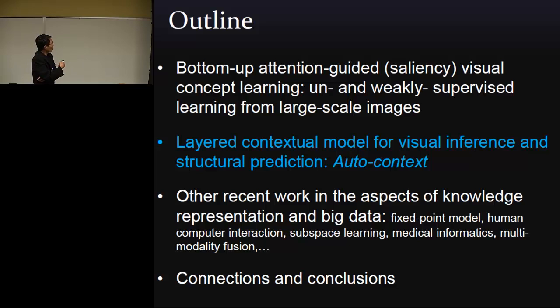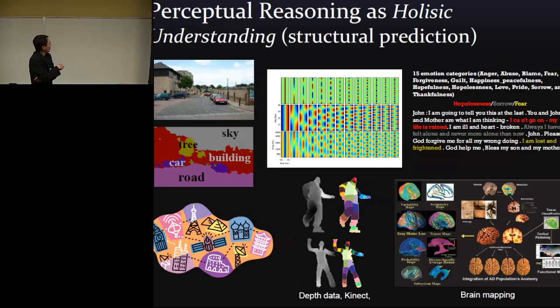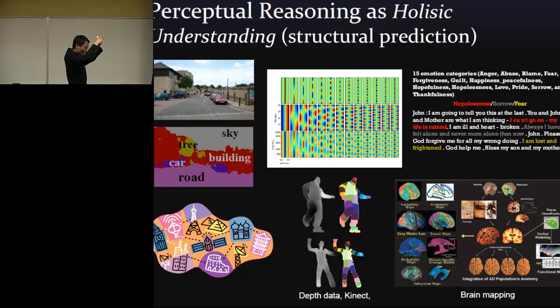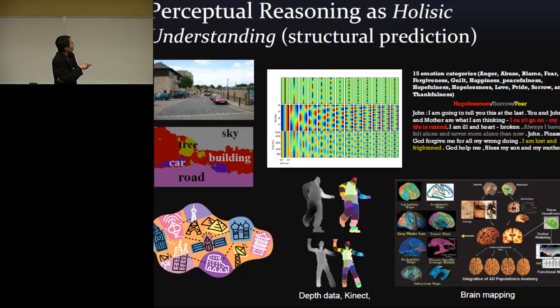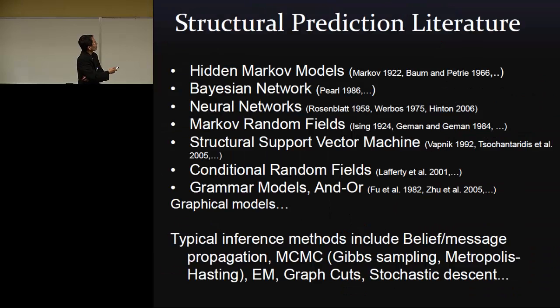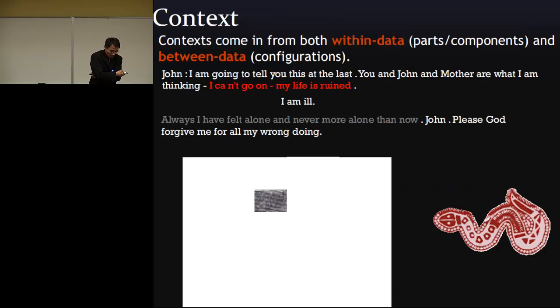Another area is structure prediction, where images, signals, documents, and social networks all come as vectors in higher-dimensional spaces — or brain images on a manifold. Our prediction is on a particular pixel, path, or variable, but we must understand everything as a whole. Standard structure prediction includes hidden Markov models, SVMs, CRFs, grammar, and belief propagation for inference. One approach I developed is called auto-context.